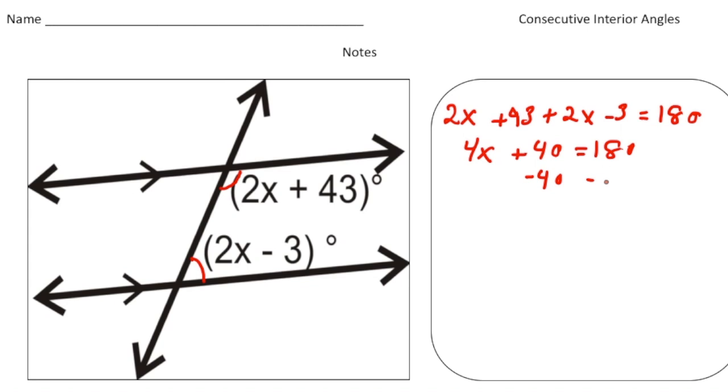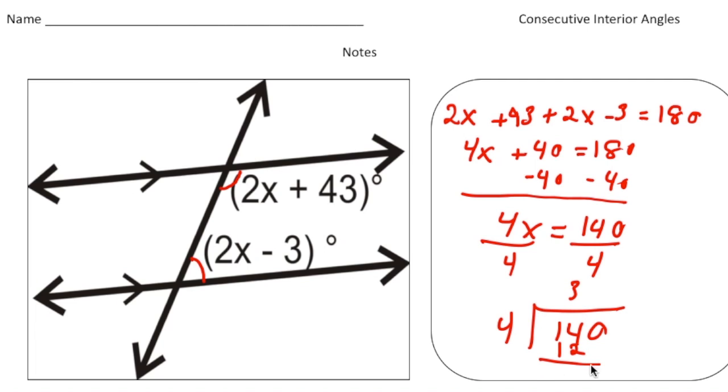So we have 4x equals 140. Now we need to divide both sides by 4. When I divide 4 into 140, let's do the long division here. So 4 goes into 14 three times with a 12, with a 2 remainder. Bring down the zero, so it's going to be 35.